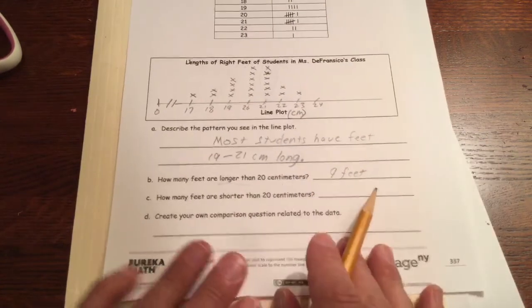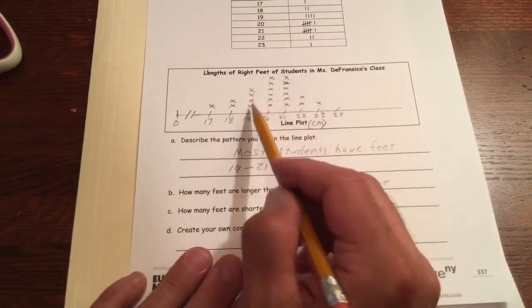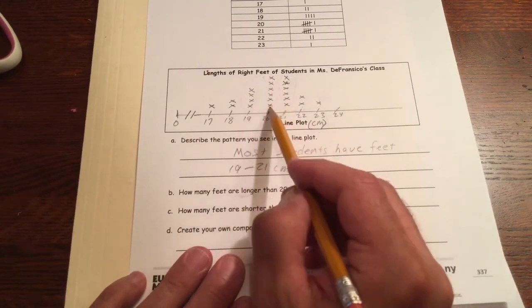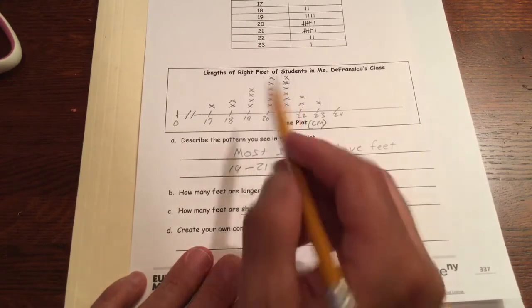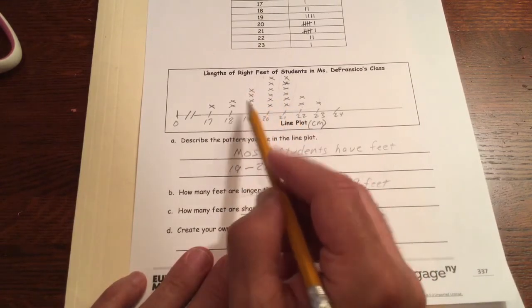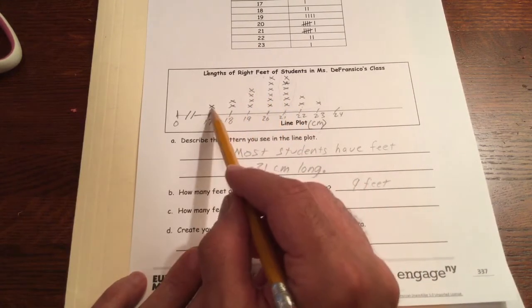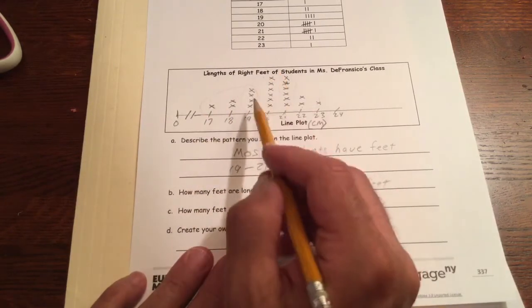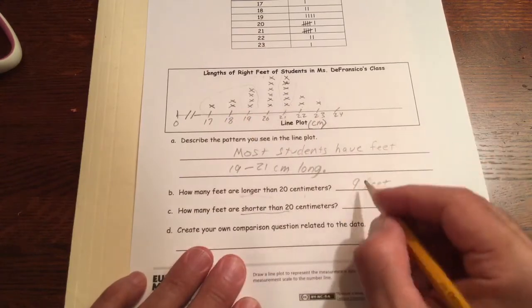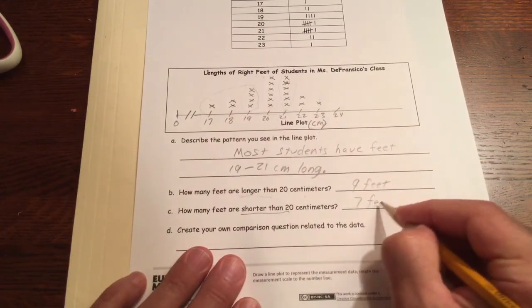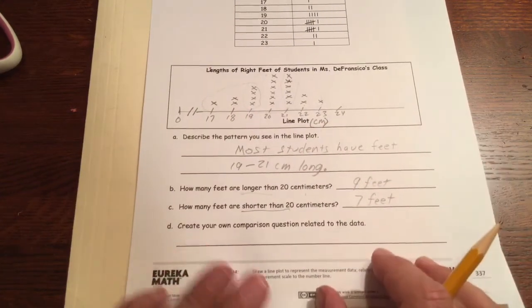How many feet are shorter than 20? Same thing, but on the other side of 20. We can't count 20 because those are the same as 20. We want the ones that are shorter than 20. Not just the 19, but 18 is also shorter than 20 and so is 17. So we're going to count these guys here. One, two, three, four, five, six, seven. Seven feet are shorter than 20 centimeters.